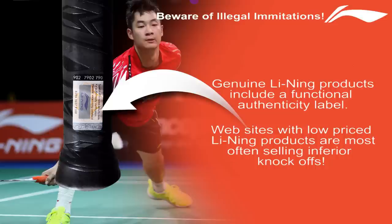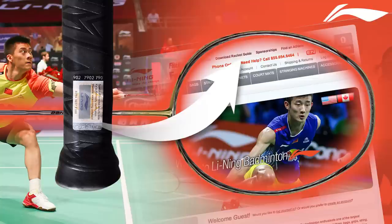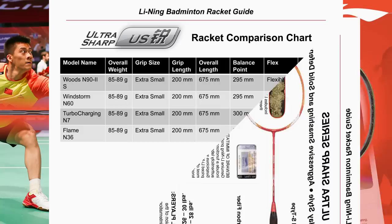Beware of illegal imitations. Genuine Li-Ning products include a functional authenticity label. Suspicious websites with low-price Li-Ning products are most often selling inferior knockoffs. In the top menu of the badminton product site, you will find a download racket guide link. Click on this link to download the racket guide, and you will find a complete listing of our rackets and their specifications.